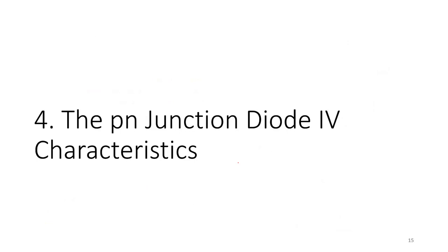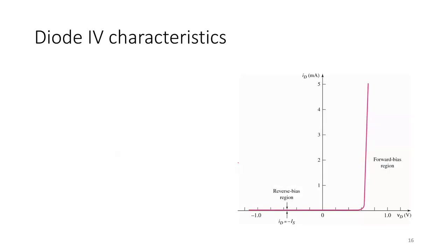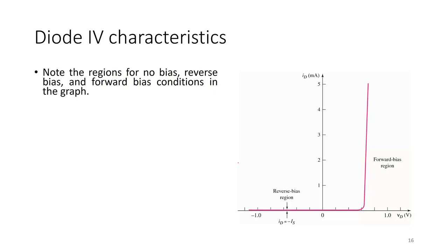Now for the PN junction diode IV characteristics. When you learn BJT and MOSFET as well, you will look at current-voltage characteristics because these plots tell you when the device turns on. On the X-axis, zero means no bias; less than zero means reverse bias; greater than zero means forward bias.